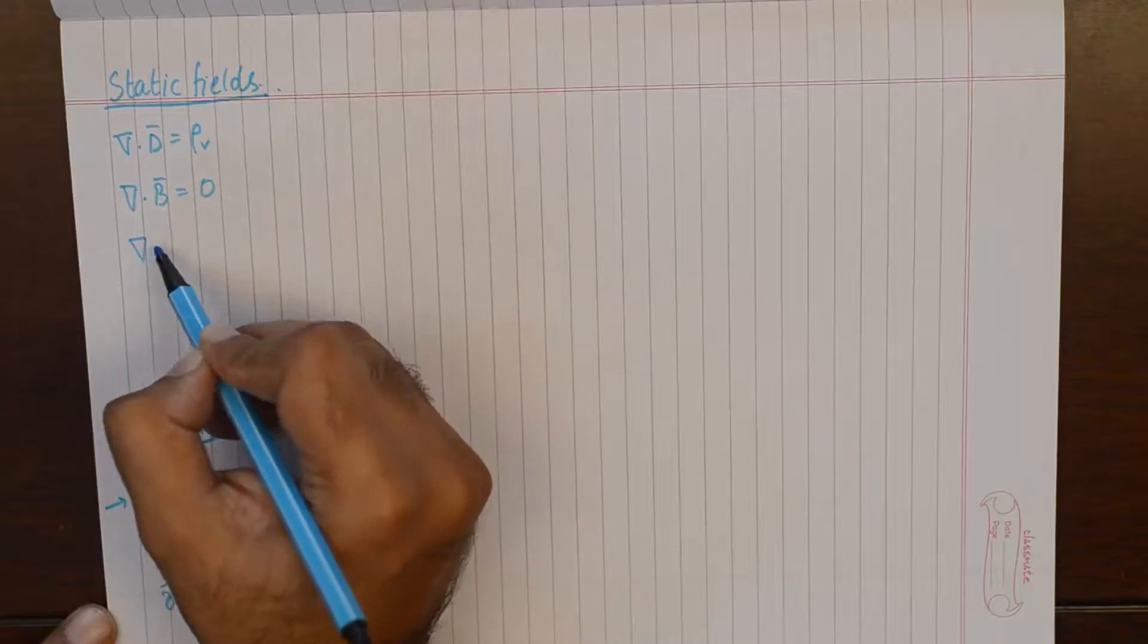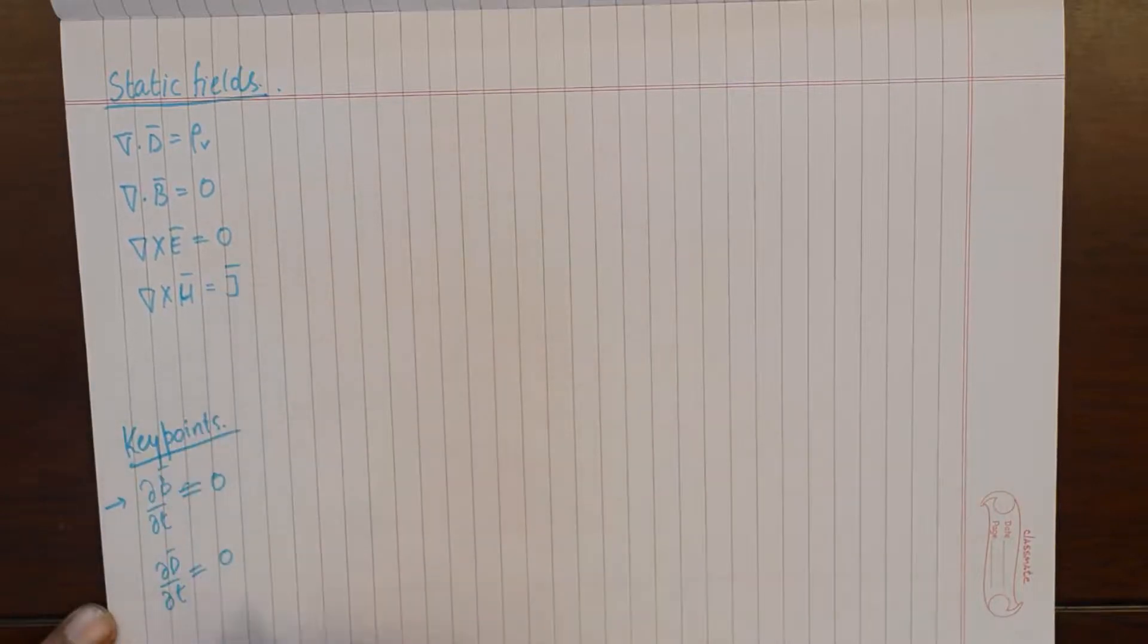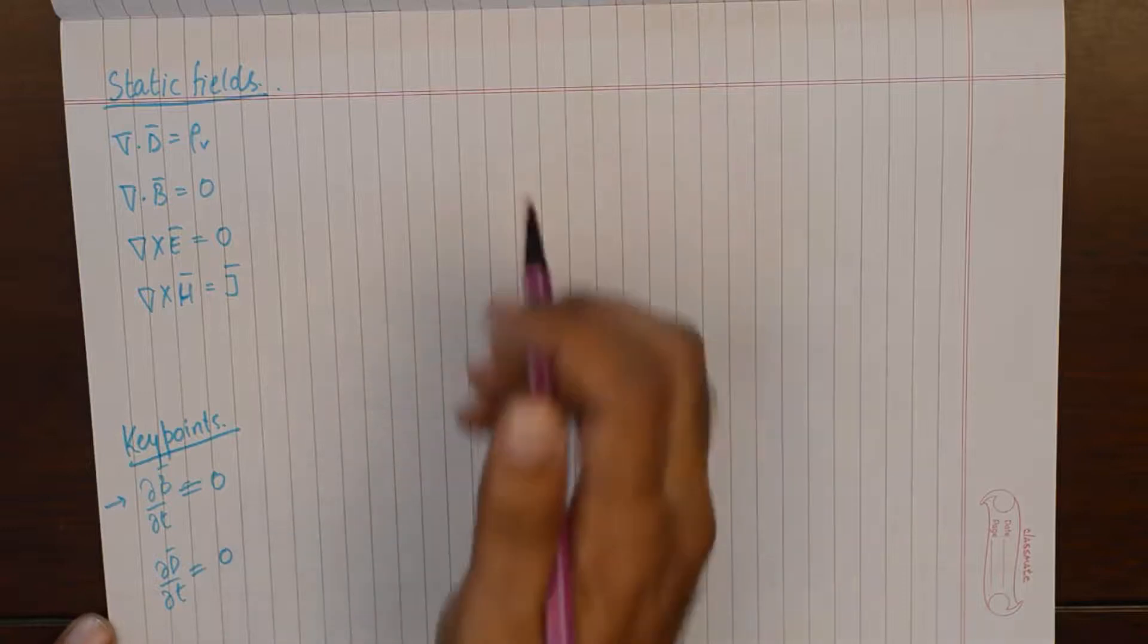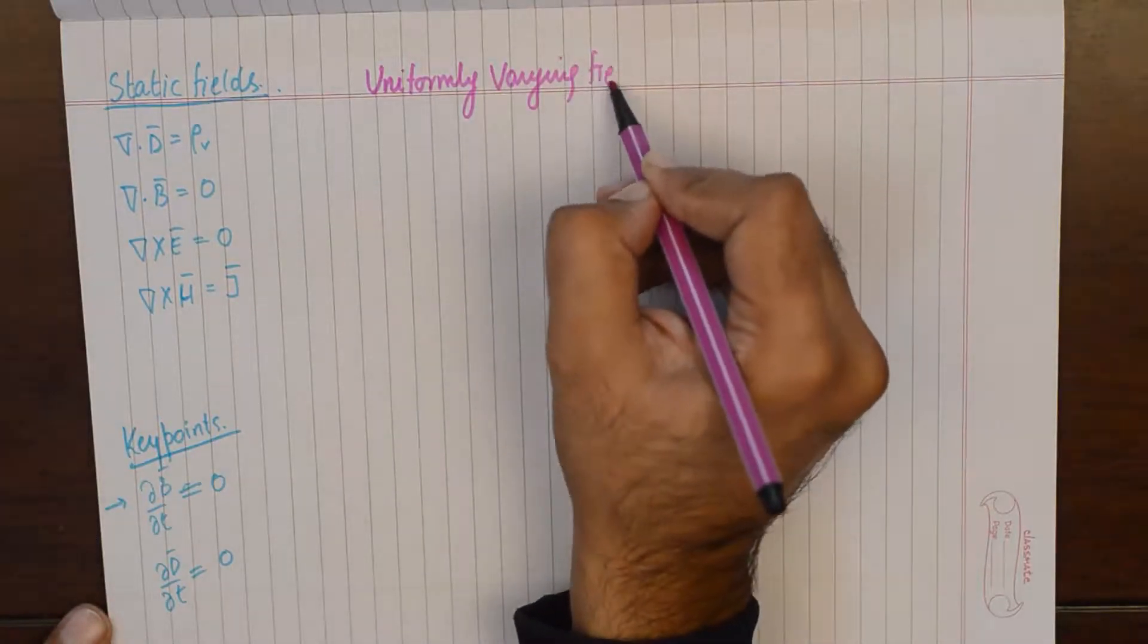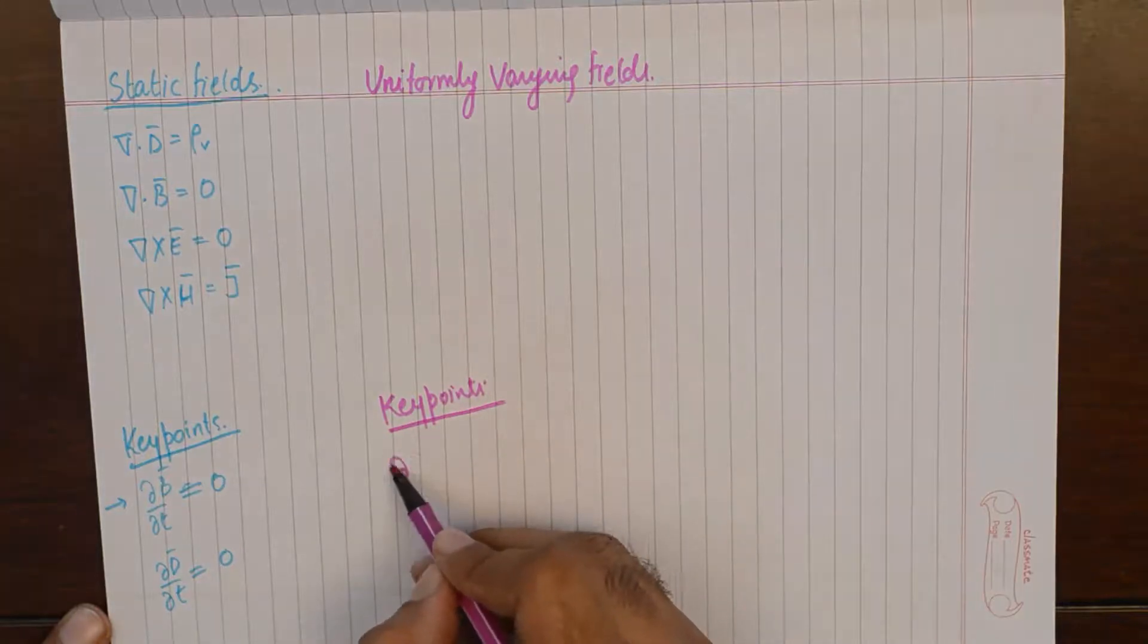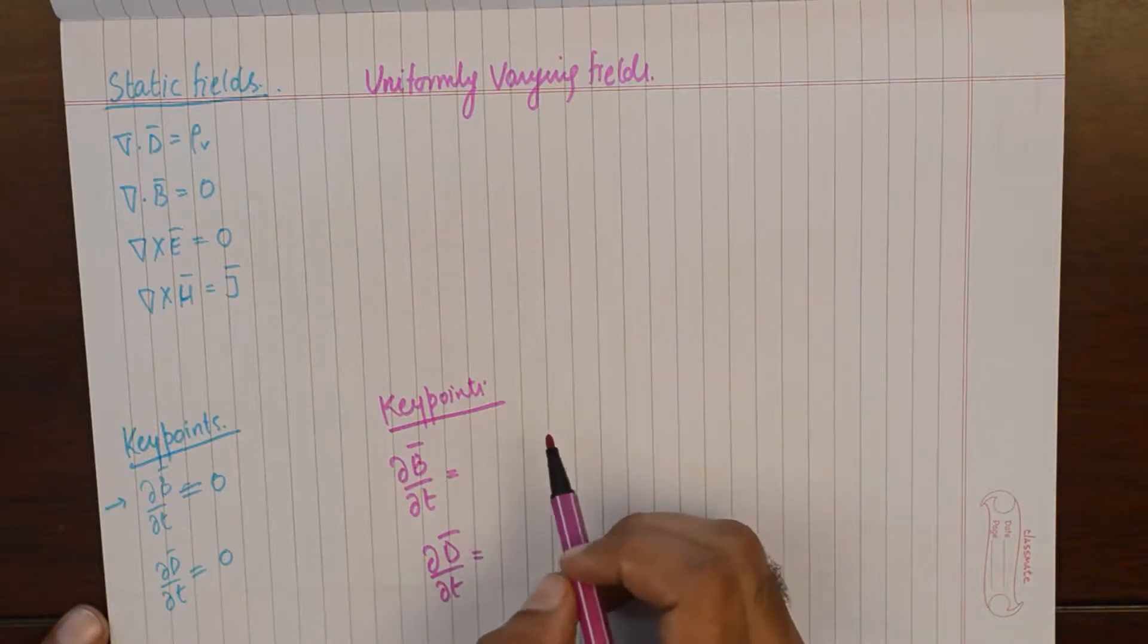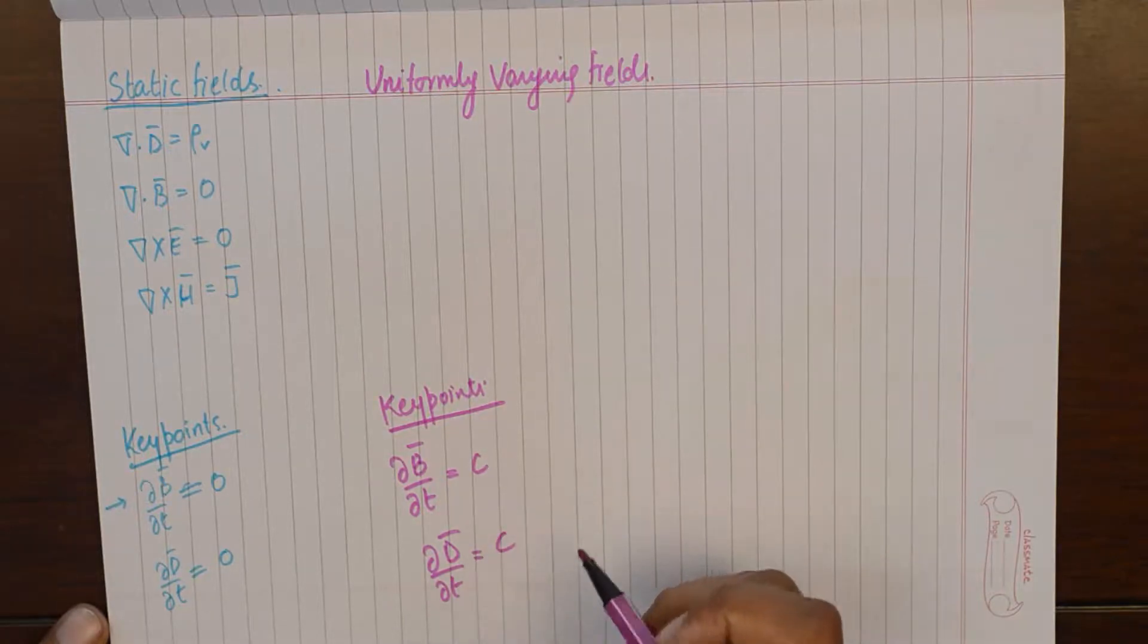That is what we substitute in static fields. The equations take up this form, which is very easy to understand. And the next case is when we have uniformly varying fields. The key points will look more or less similar and they will affect only these two parameters, these two time varying components in Maxwell's equations.